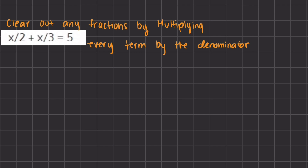Our next manipulation method is to clear out any fractions by multiplying every term by the denominator. We have x divided by 2 plus x divided by 3, all equals 5. If we want to get rid of these fractions, we multiply every term by the denominator. In this case, we want to find the least common denominator, which is 6 because 2 times 3 equals 6. So we multiply the entire expression by 6, which will eliminate our denominators.